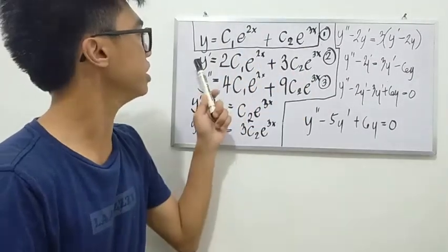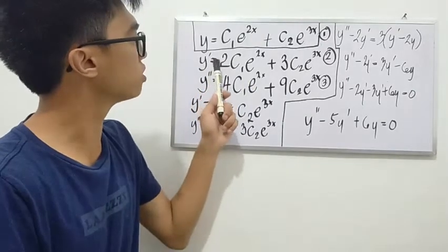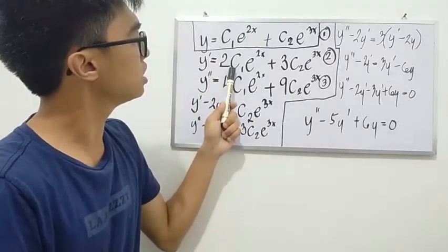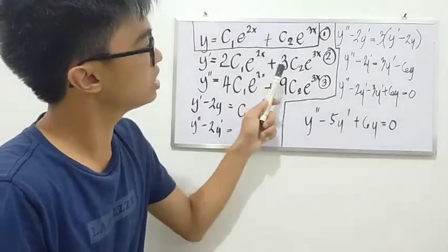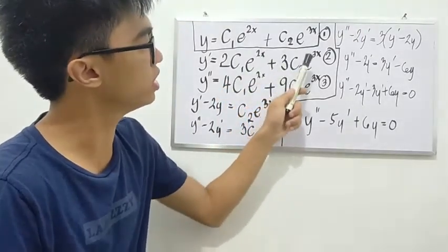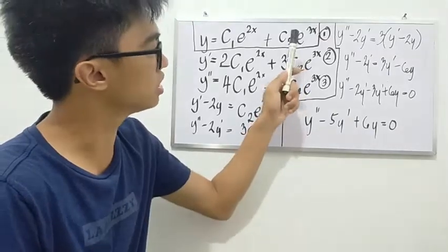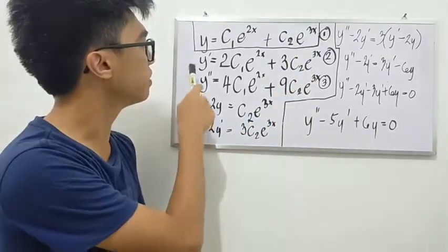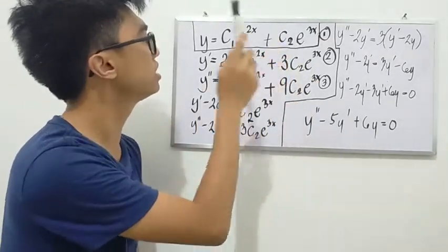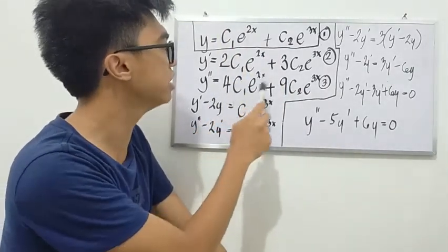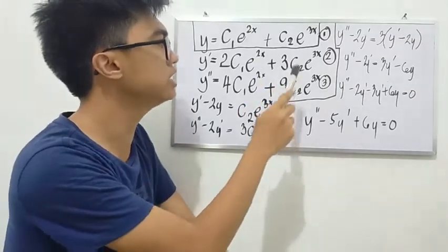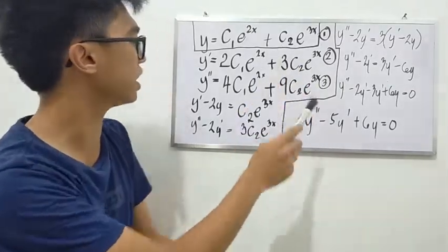The first derivative of this equation is y prime equals 2c sub 1 e to the x plus 3c sub 2 e to the 3x. Second derivative is y double prime equals 4c sub 1 e to the x plus 9c sub 2 e to the 3x.